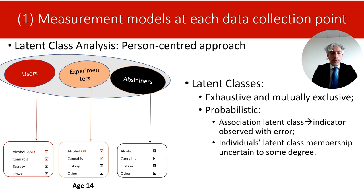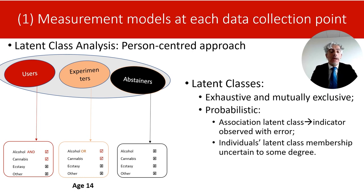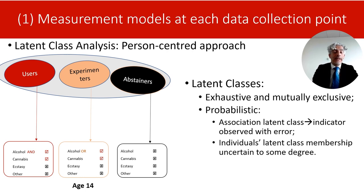However, latent class analysis is a probabilistic model, so the association between the latent classes and the behaviors we observe — which we call indicators — is observed with error. For example, individuals in the abstainer class may have 96% probability of not using alcohol, but there is still a 4% probability that they may use it. Consequently, individuals' membership to the latent classes is also uncertain. We do not have certainty that when we allocate an adolescent to the abstainer class, the adolescent actually belongs to that class, since the behaviors we observe are observed with error. Latent class analysis allows to estimate that an individual may have, say, 89% probability of belonging to the abstainer class, but that means there is still 11% probability that the individual may belong to another class.